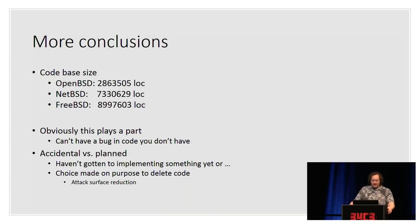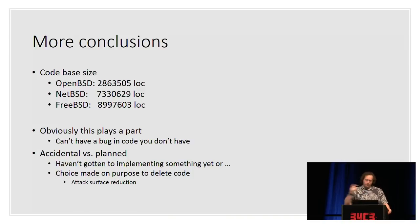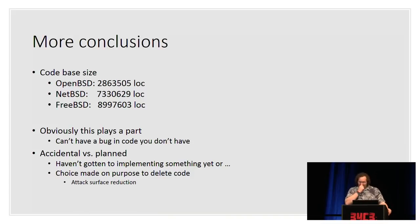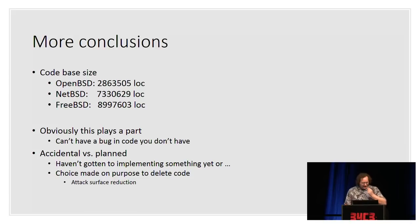Finally, looking at code base size alone tells you something about attack surface. OpenBSD's kernel is about 2.8 million lines of code, NetBSD is about 7.3 million, and FreeBSD is about 9 million. OpenBSD can have fewer bugs simply because it has less code — you can't have a bug in code you don't have. It's a combination of both accidental reduction — things not yet implemented — and planned choices to delete code on purpose.